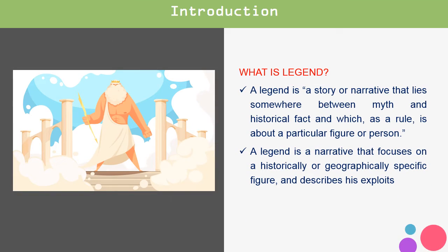Now let's start our lesson about what is a legend. A legend is a story or narrative that lies somewhere between myth and historical fact, and which, as a rule, is about a particular figure or person. This is the definition of a legend.